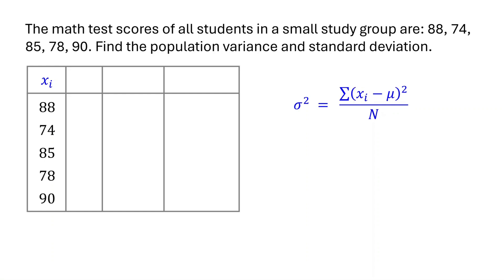In the second column, find the population mean and write it down. In the third column, calculate the difference between each data point and the mean. In the last column, square each difference.